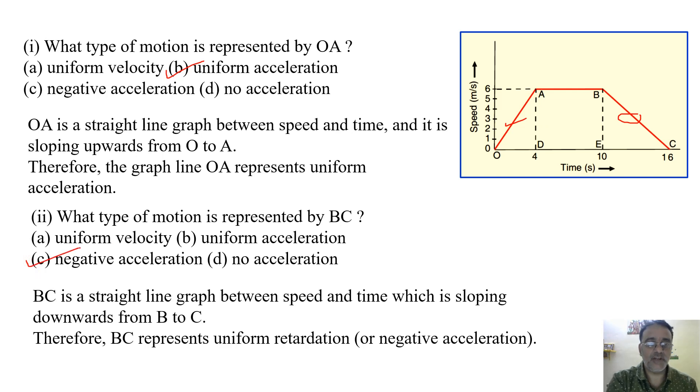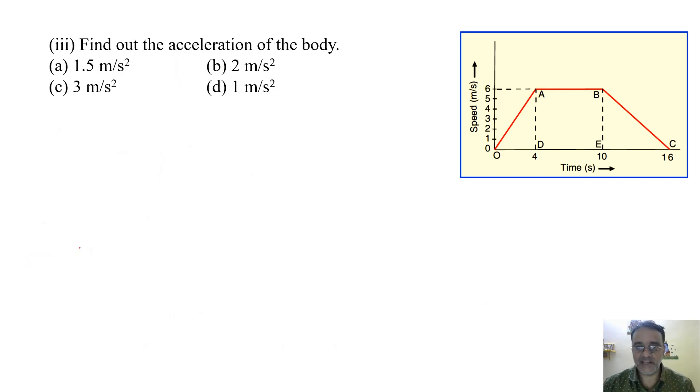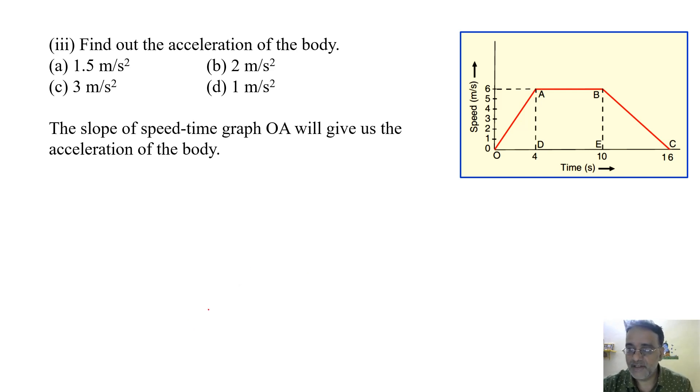So now we will move towards the next question. Find out the acceleration of the body. Now see, the slope of the speed-time graph, that is OA, will give the acceleration of the body. And here the slope of line OA is AD upon OD. And in this graph, AD is 6 meter per second and OD is 4 seconds.